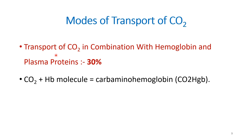Carbon dioxide is also transported in combination with hemoglobin and plasma proteins, which accounts for about 30% of transport. Carbon dioxide combines with hemoglobin to form carbaminohemoglobin, and that is how it is transported in this form. It also combines with plasma proteins to get transported.